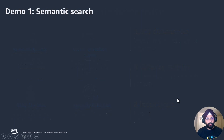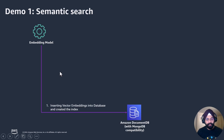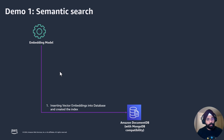Let's see how to build a semantic search app. Before the demo, I want to walk you through the basic architecture. The first step is to load the database and load the relevant vector embeddings into DocumentDB. To do that, you need to know which fields you want to convert into vector embeddings and also choose a model. In my demo, I will be choosing Amazon's Titan embedding model, though you are free to choose whatever you want.